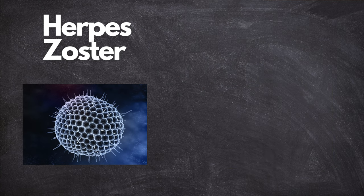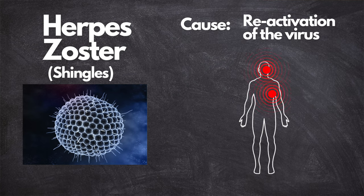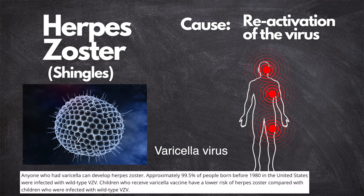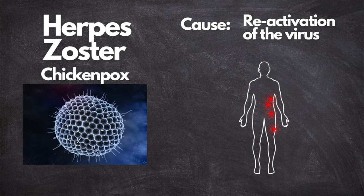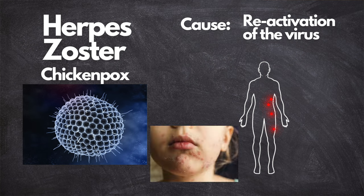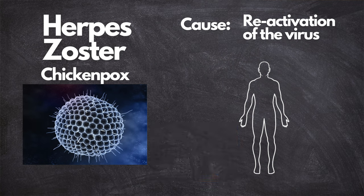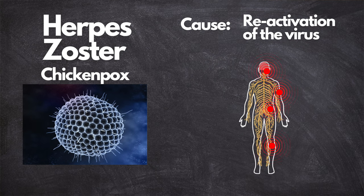Let's begin with herpes zoster, commonly known as shingles. Herpes zoster is caused by the reactivation of the varicella zoster virus, a virus that 99.5% of the American population born before the 1980s is already infected with, also known as chicken pox. If you've had chicken pox as a child, then you most likely still have this virus living in your body. Even after a person recovers from an initial chicken pox episode, the virus doesn't go away but remains dormant in our nervous system, and later in life it can reactivate, resulting in herpes zoster.